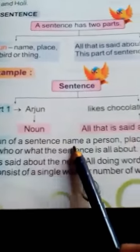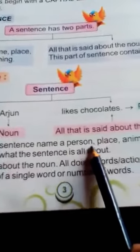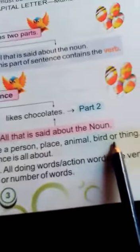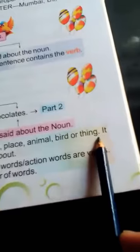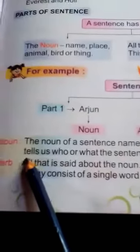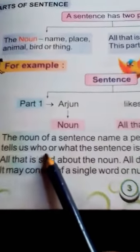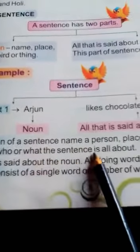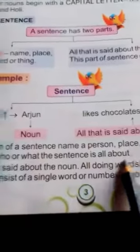The noun of a sentence names a person, place, animal, or thing. It tells us who or what the sentence is all about.